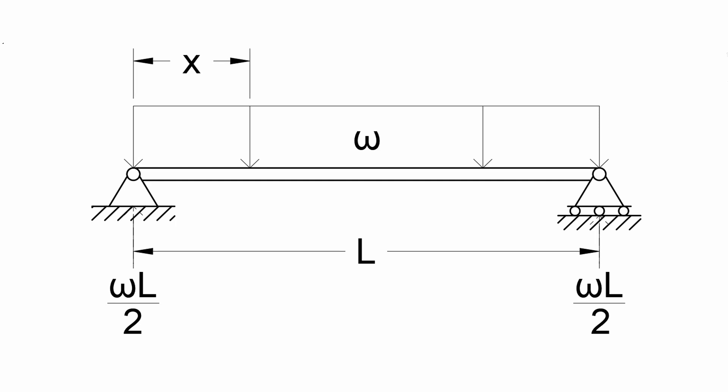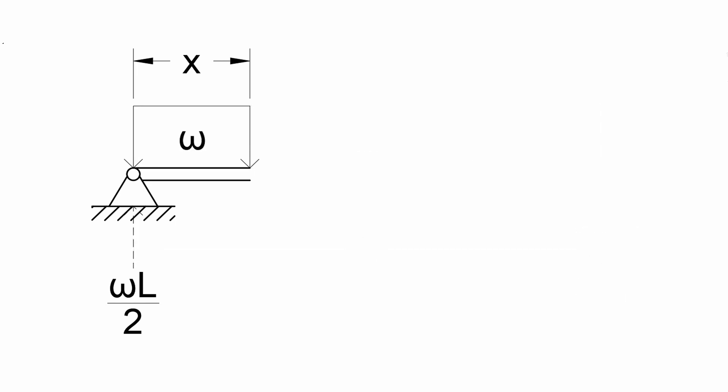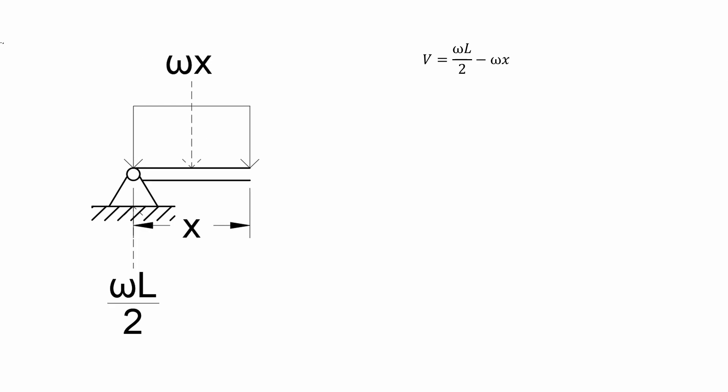Again, in statics, if you cut a section on a member, you can either consider the left side or the right side in your analysis. In this case, let us consider the left side of the section. To determine the equivalent shear force at that section, we just sum up all the vertical loads. Starting from the left side, we have V equals omega L over 2 — positive because the reaction goes upward — minus the equivalent concentrated load caused by the uniform load, negative omega x, which is negative because the uniform load goes downward.